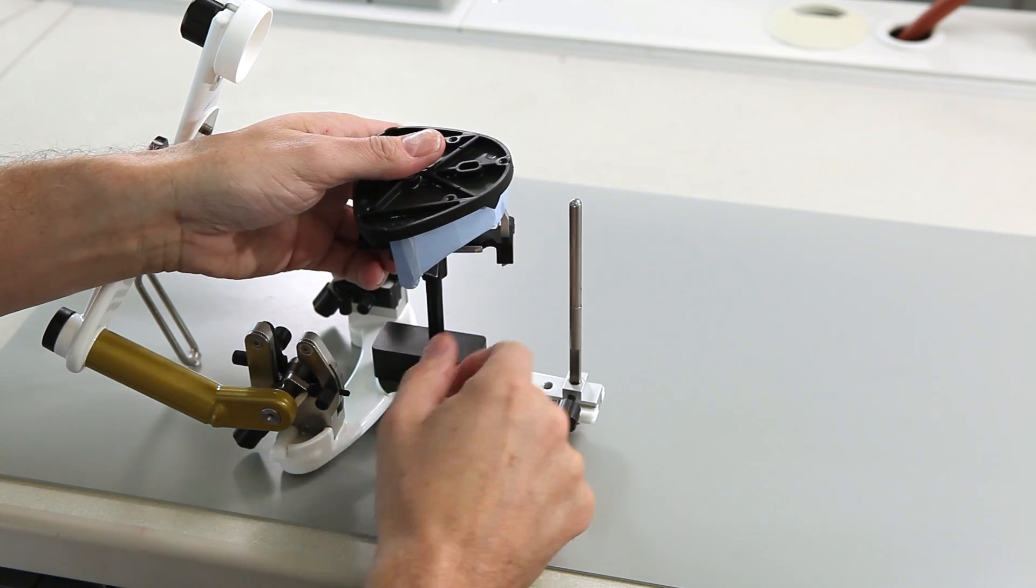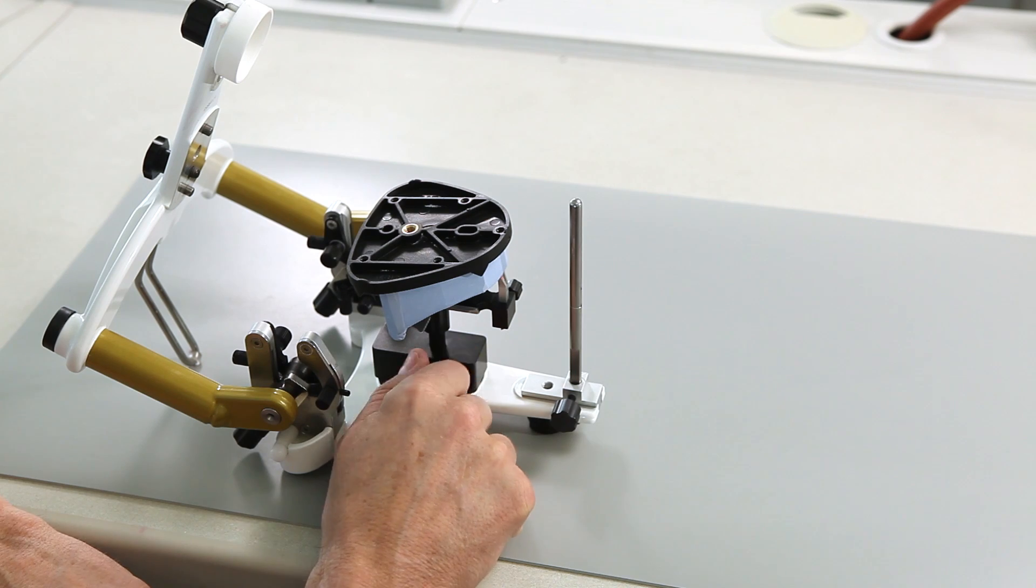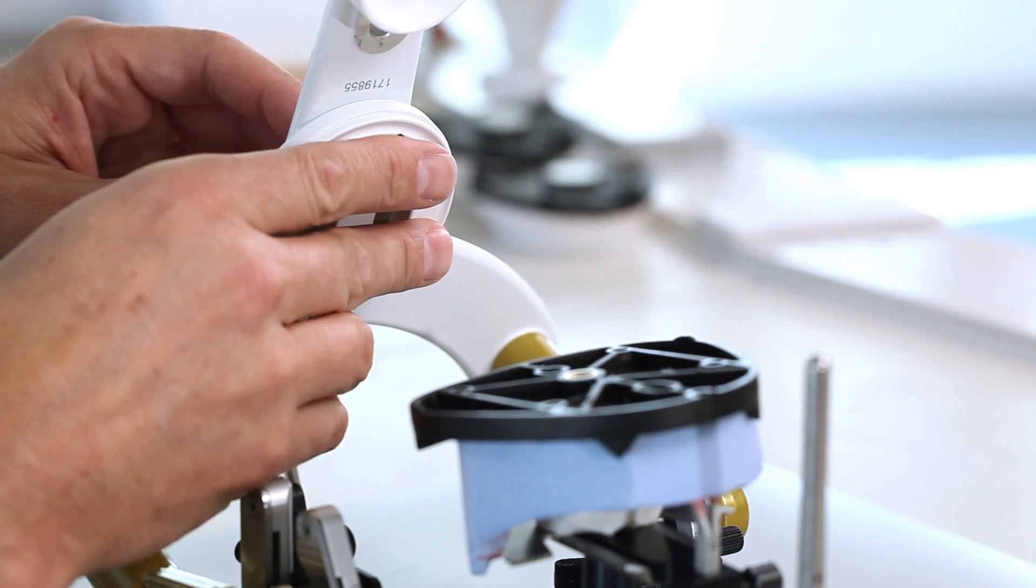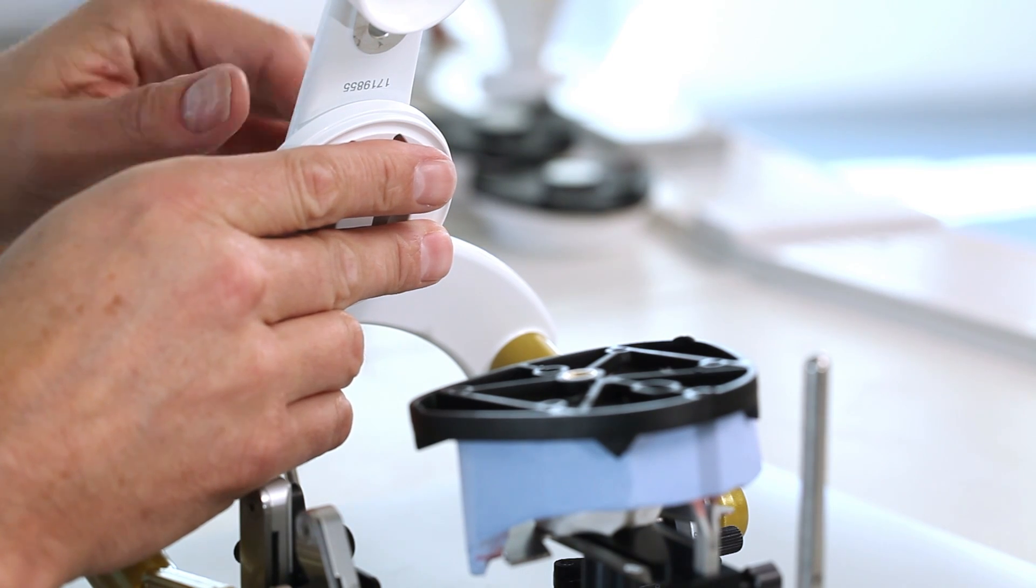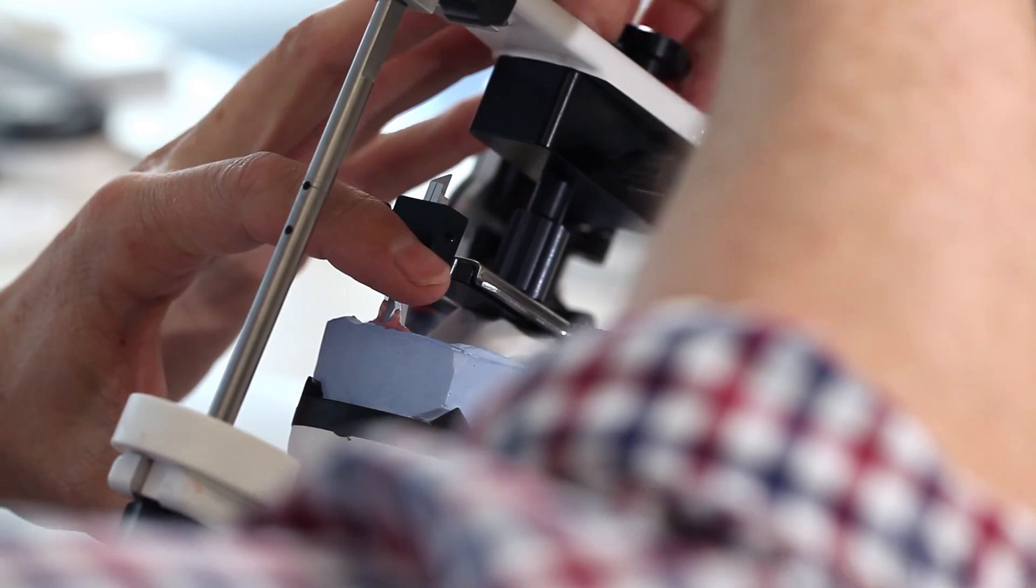Mount the horizontal guide in the articulator with the help of the instrument carrier. Mount the base plate in the articulator and secure the mandibular model using dental plaster. Wait until the plaster has set.